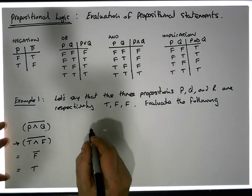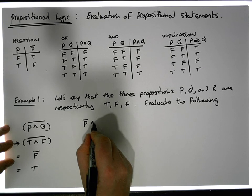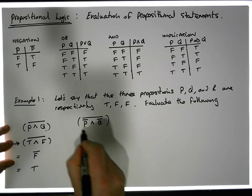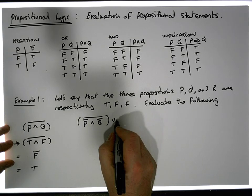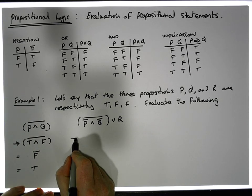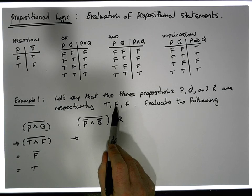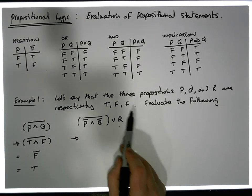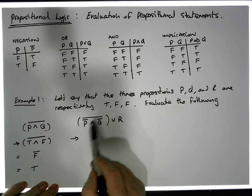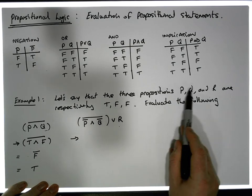Let's have a look at something a little bit more complicated. What is the negation of (P̄ ANDed with Q̄), all negated, ORed with OR? We want to evaluate this. The first thing we're going to do is make our substitution: everywhere we see a P we put in T, everywhere we see a Q we put in F, and everywhere we see OR we put in F. So P's go to trues, Q's go to falses, and OR goes to false.